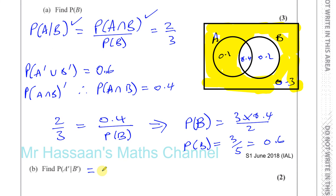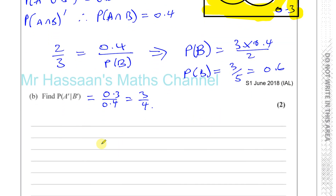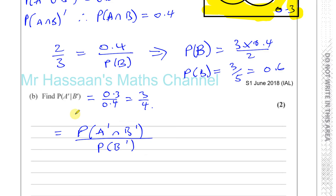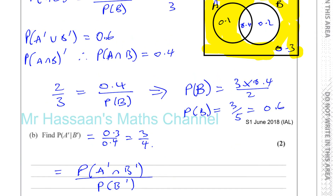We could show the steps more formally: P(A'|B') equals P(A' ∩ B') divided by P(B'). A complement intersection B complement is the same as (A union B) complement — everything outside of A and B — which is 0.3. Divided by everything outside of B, which is 0.4. Of course, you get the same answer: 3 quarters. So that's part B done.